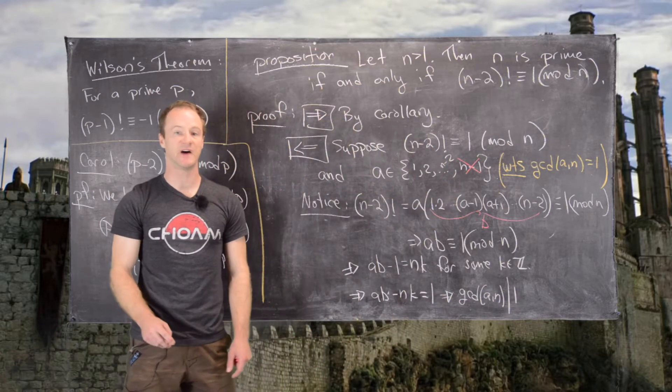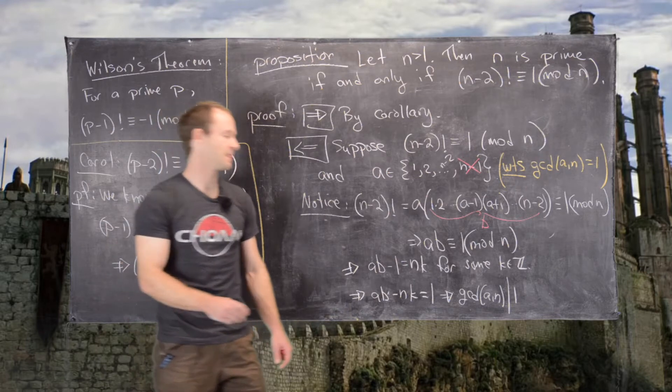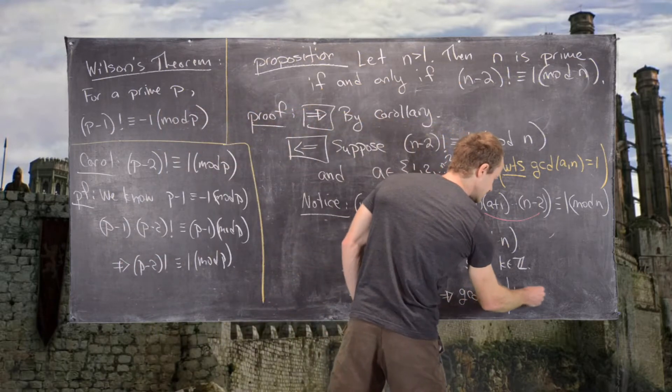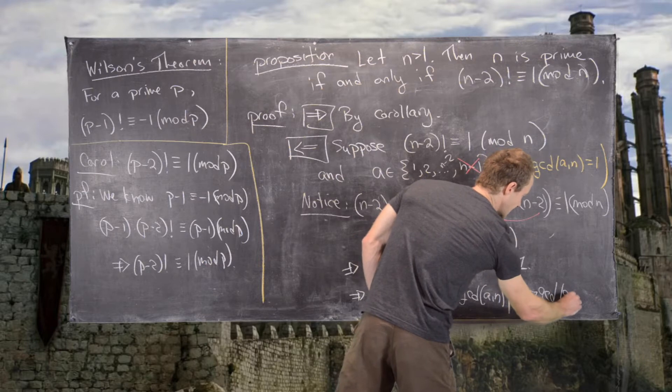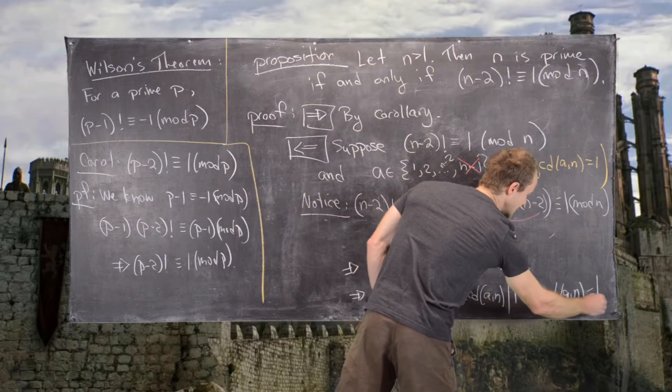So that means 1 is a multiple of gcd(a,n). In other words, gcd(a,n) divides 1, which tells us that gcd(a,n) is in fact equal to 1.